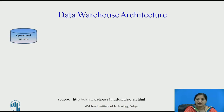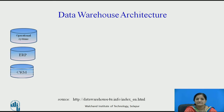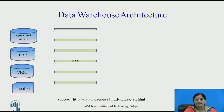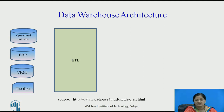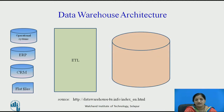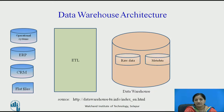Now let's see the Data Warehouse architecture. The external information sources include operational systems, operational databases, enterprise resource planning data, customer relationship management data, and flat files. All these are collected and staged by the ETL process, which cleans the data and stores it into one common repository called the Data Warehouse. The Data Warehouse consists of raw data, metadata, and aggregated summary data.